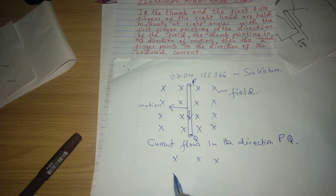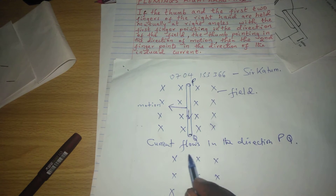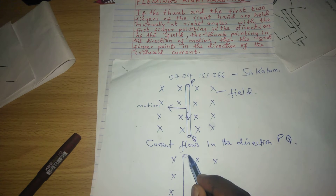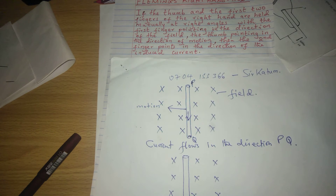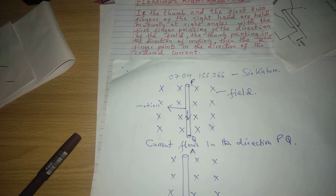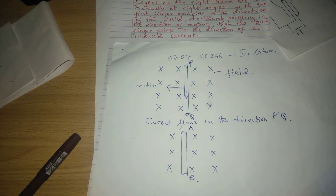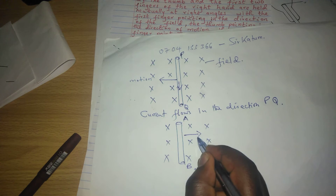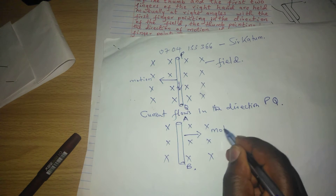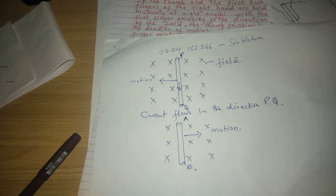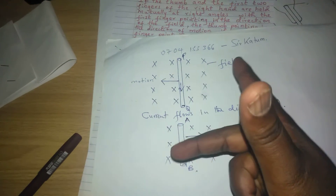For a contrary case, where the current is also going into the paper, we have the conductor AB being moved in the opposite direction — to the right hand side. This is the motion of conductor AB. The direction of the field again is into the paper.